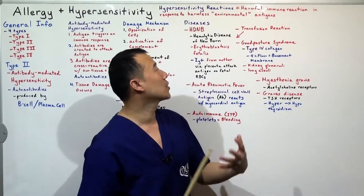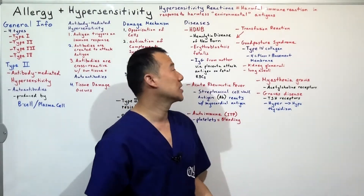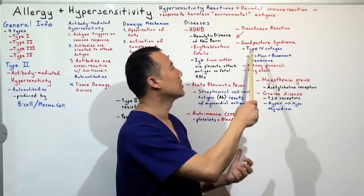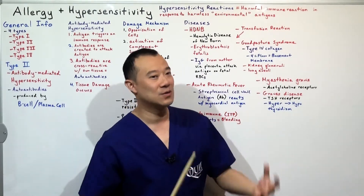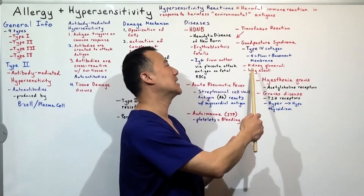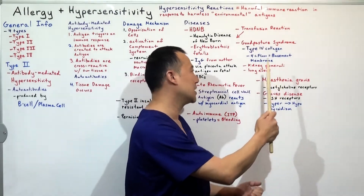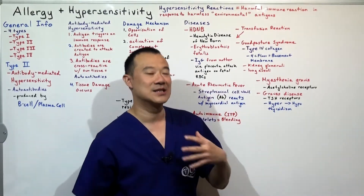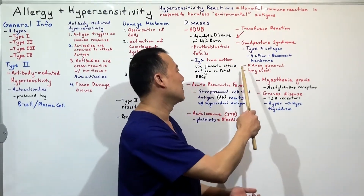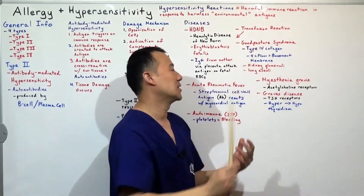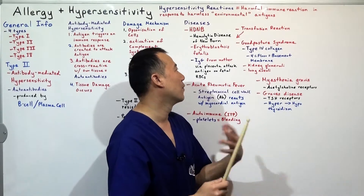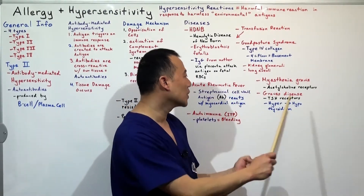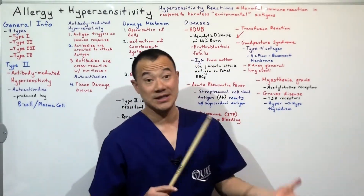Goodpasture syndrome involves type 4 collagen — the collagen in the basement membrane — being attacked by antibodies. Type 4 collagen forms the basement membrane, so when the glomeruli of the kidney and the lung alveoli are affected, you get Goodpasture syndrome, a disease affecting both the kidneys and the lungs, related to antibodies against type 4 collagen.